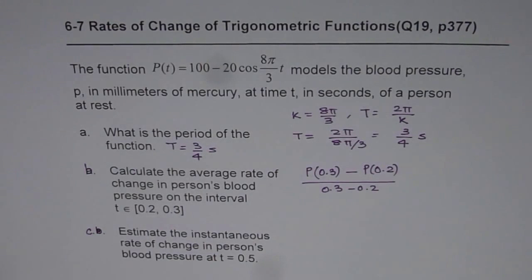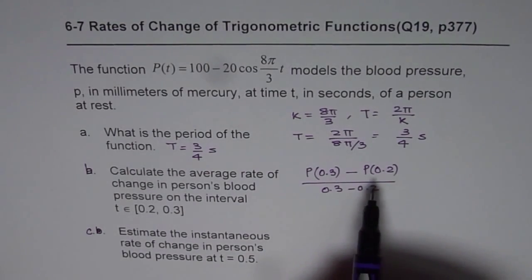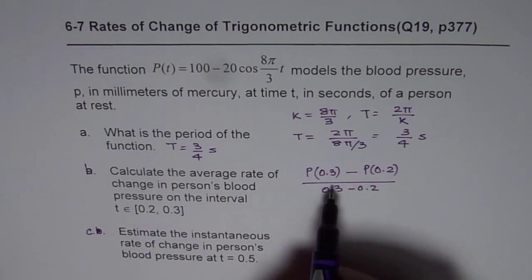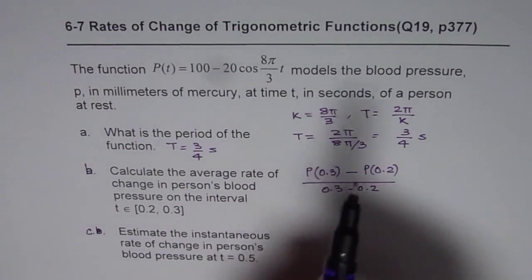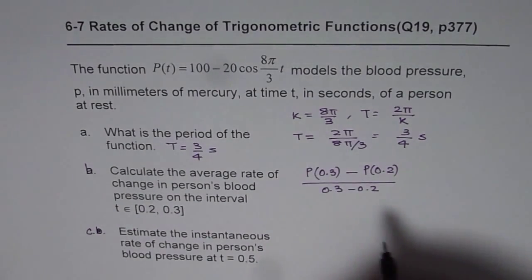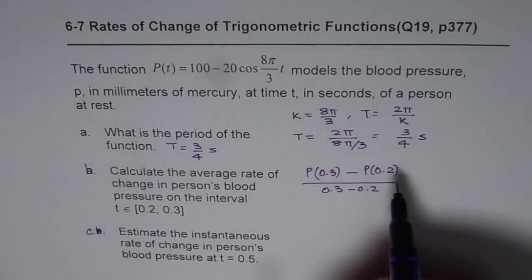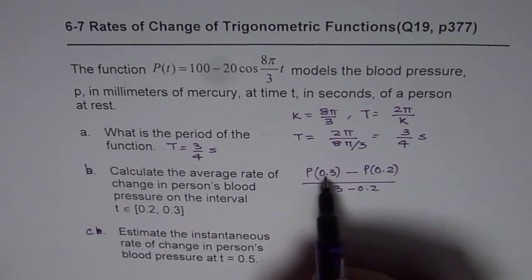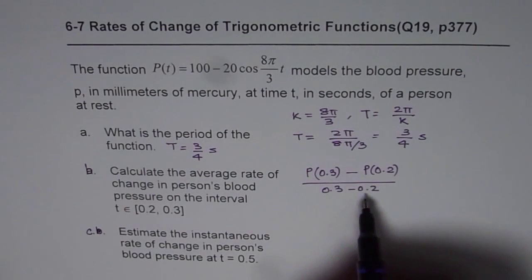You can use the calculator to calculate the value. When we say P(0.3), it means you have to substitute T as 0.3 and calculate the value of P. Similarly, substitute T as 0.2. Once you have these values, then you can divide and get your answer.